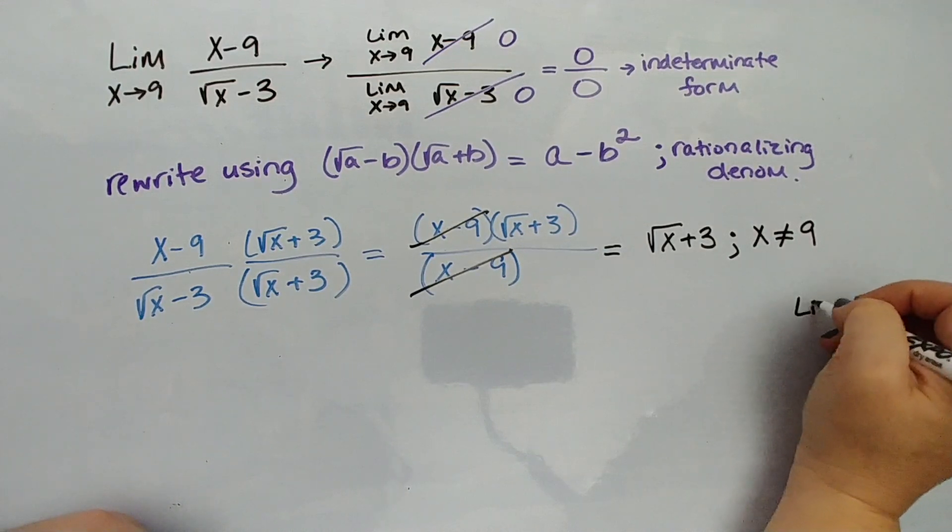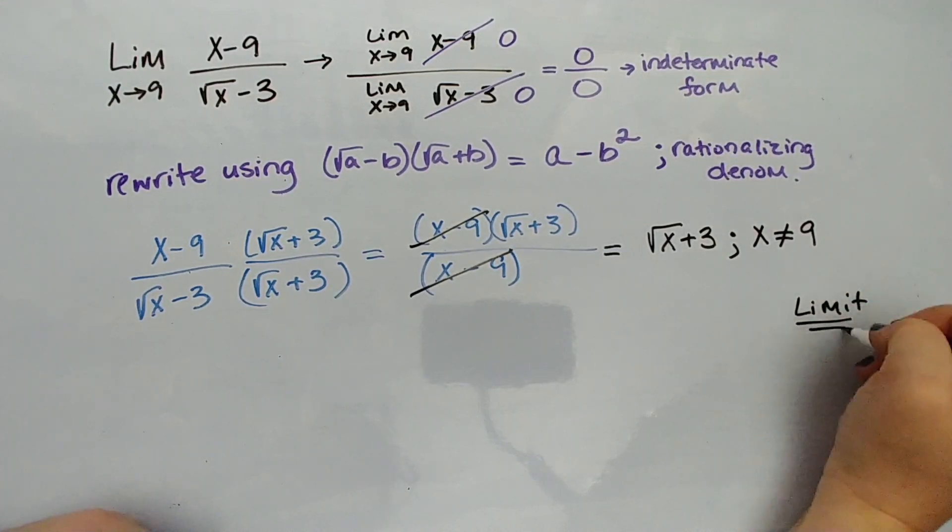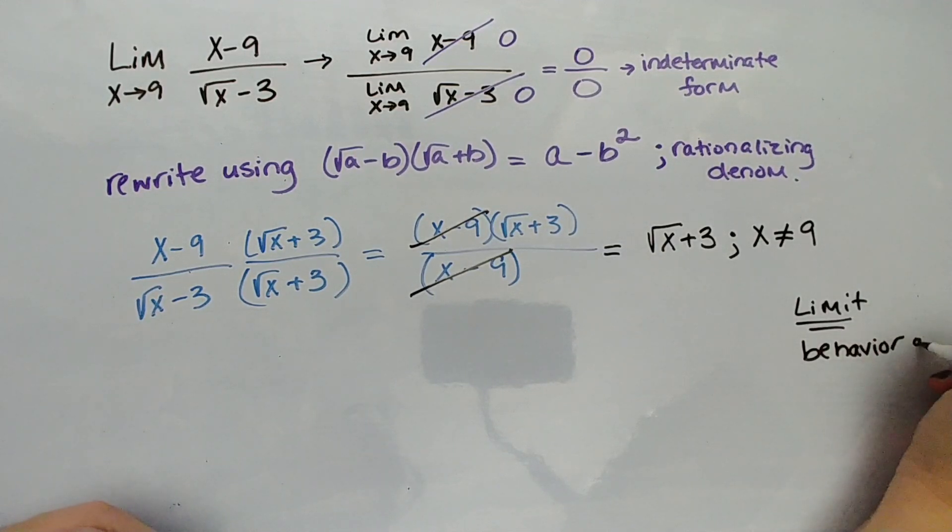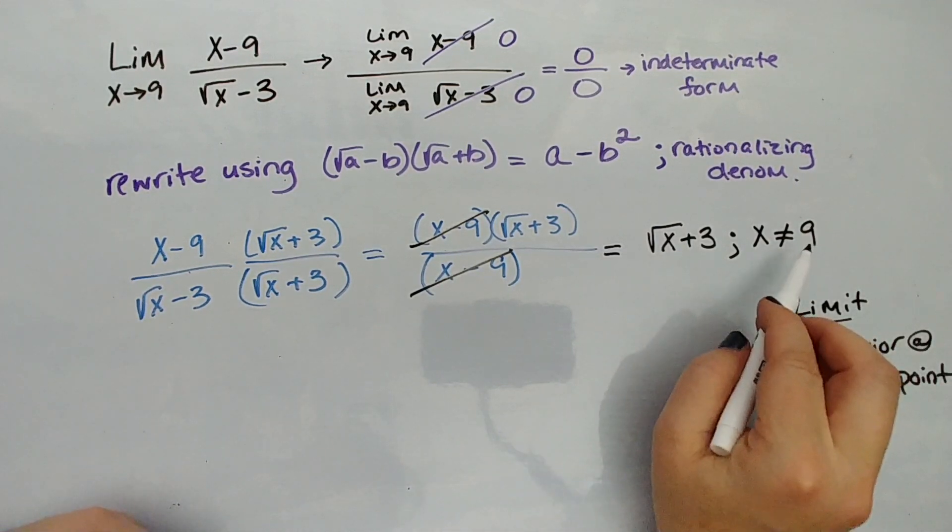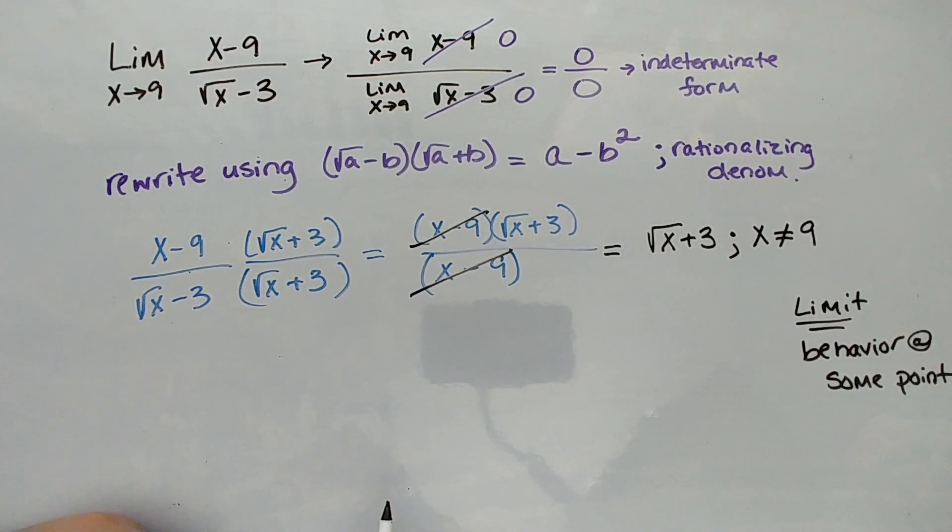But remember, a limit doesn't tell you about the function. It tells you about the behavior at some point. We're going to be able to look at the limit for √x + 3 as x approaches 9, because we're just talking about the behavior. Limit is the intended height of a function. Even if it doesn't have a value, it's the intended height, what the function intends to do at that point.